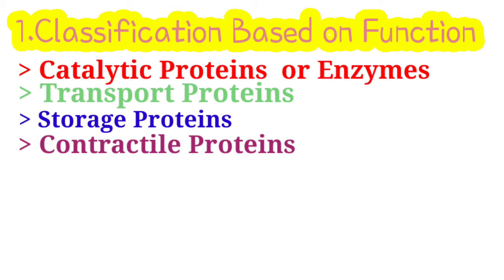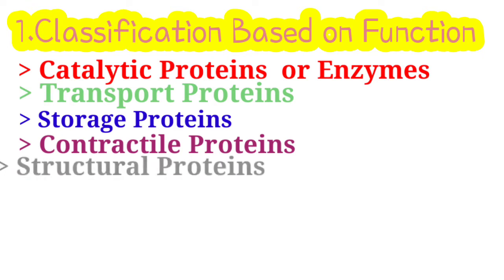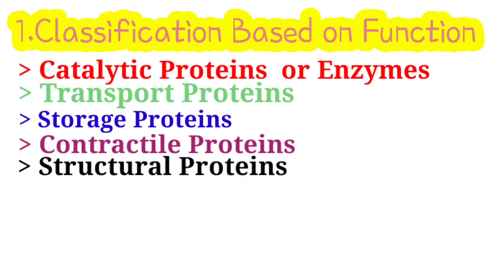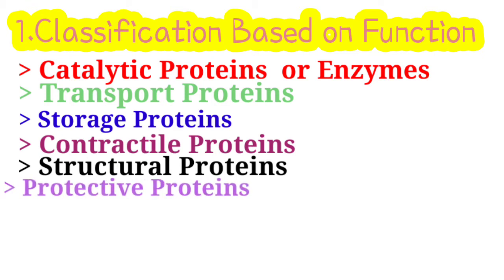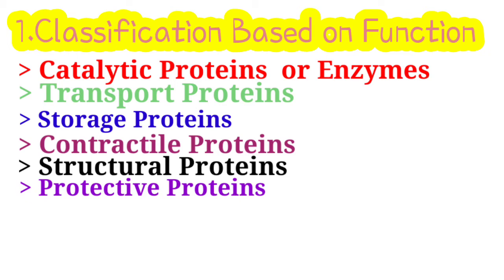Storage proteins are concerned with storage — for example, apoferritin stores iron. Contractile proteins are involved in muscle contraction, like actin and myosin. Structural proteins give strength and protection to biological structures, for example collagen, which is present in tendons, bones, and connective tissues, and elastin of ligaments.